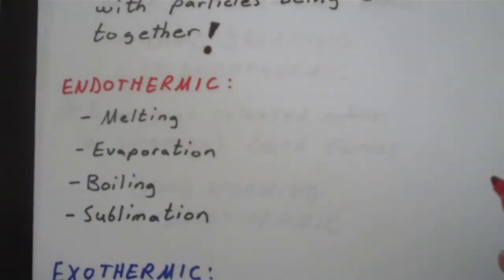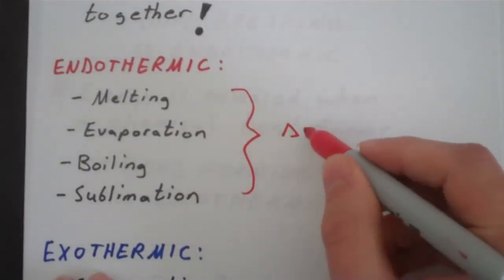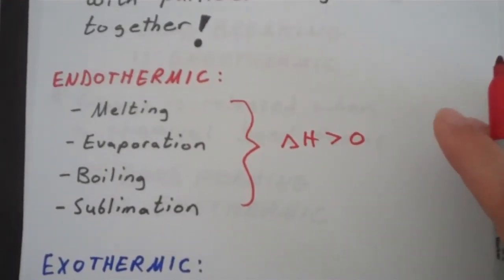For all of these processes here, you're going to have a positive delta H. Make sense?